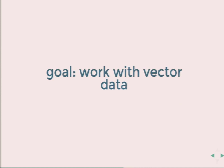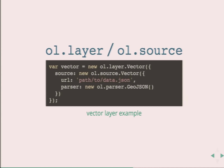Next goal is to work with vector data. All I've shown so far is raster tiles, but a big focus in OpenLayers 3 is working efficiently with vector layers. In this example it's a vector layer using the base vector source; I give it a URL path to my data and tell it the format — GeoJSON. We currently have support for GeoJSON, TopoJSON, GML, KML, and GPX vector data sources, and we're expanding that list to reach feature parity with OpenLayers 2.